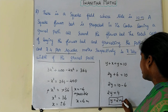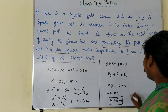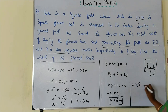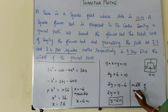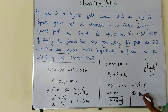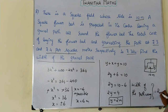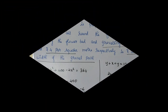Therefore, the width of the gravel pathway is equal to 2 meters. This is our required answer.